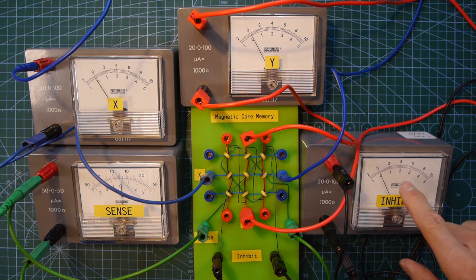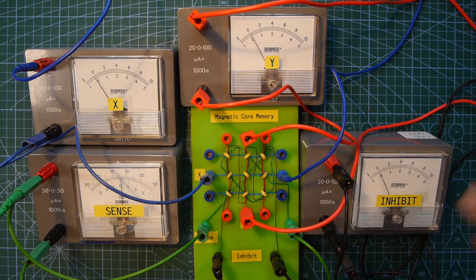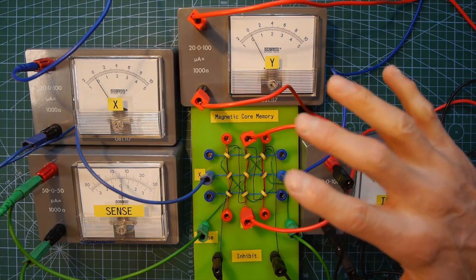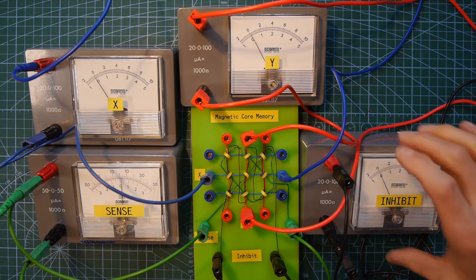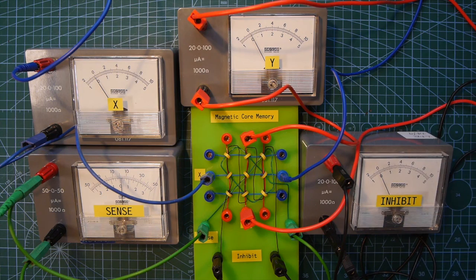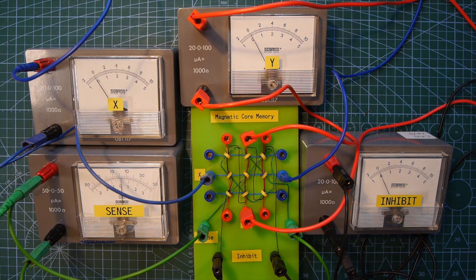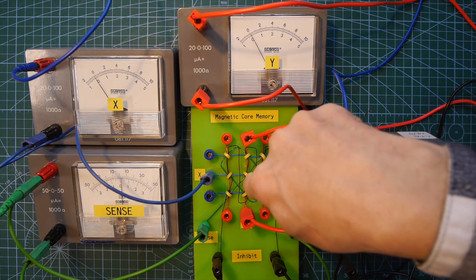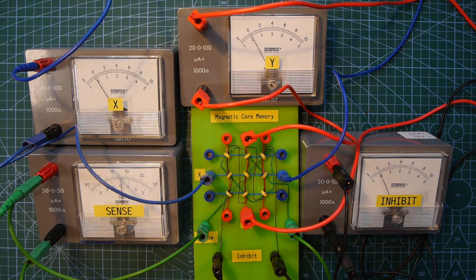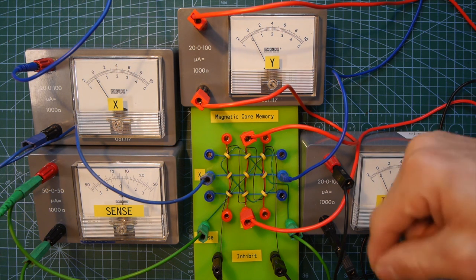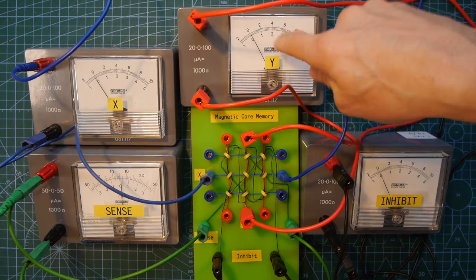So what I do is I pass a current in the opposite direction through the inhibit wire through all the cores in the top plane. So anything I do on the top plane, if there's a one already stored in there, anything I do in the top plane will not affect that one because I've got half the current coming down the inhibit line in the opposite direction to the two currents that want to turn it into a zero. So all the other planes in the core stack will be reset to zero, but this one core in the top plane of the stack won't be reset to zero. It will retain its one because there's this extra third current going in the opposite direction, cancelling one of the coincident currents.